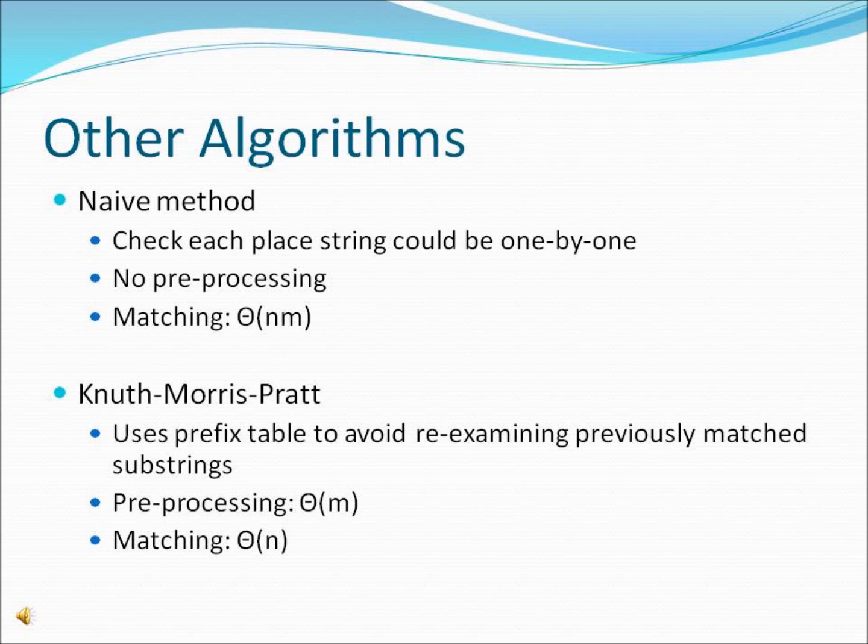The Knuth-Morris-Pratt algorithm is much cleverer than this and uses a prefix table to save re-examining previously matched substrings. This algorithm has preprocessing time of Θ(m) and matching time of Θ(n).